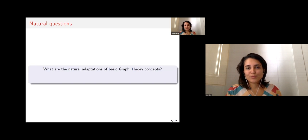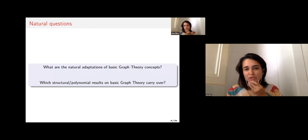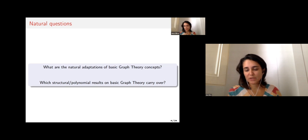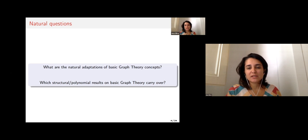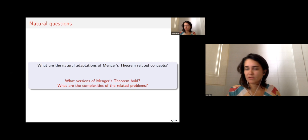I'm usually interested in two types of questions: first, the basic adaptations of graph theory concepts, and the structural polynomial results that carry over nicely from basic graph theory. In this talk, I will concentrate on Menger's theorem related concepts — specifically what versions of Menger's theorem hold, and the complexity of the related problems.